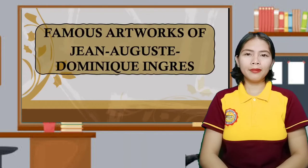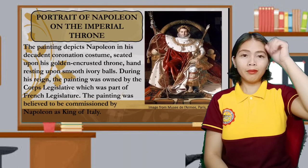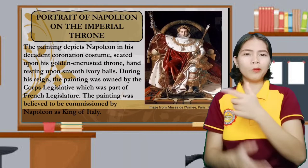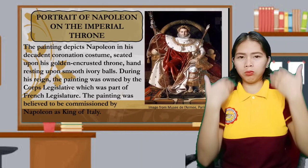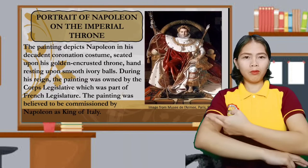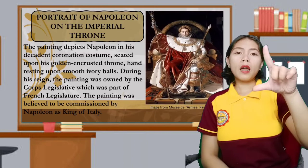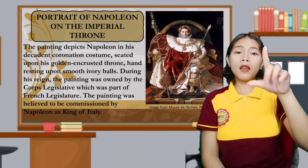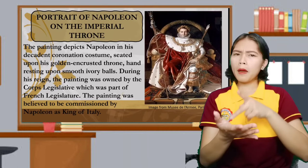Here are the famous artworks of Jean-Auguste-Dominique Ingres. First, the Portrait of Napoleon on the Imperial Throne — this painting depicts Napoleon in his decadent coronation costume, seated upon his golden encrusted throne, hand resting upon smooth ivory balls. During his reign, the painting was owned by the Corps législatif, part of the French legislature, and was believed to be commissioned by Napoleon as king of Italy.